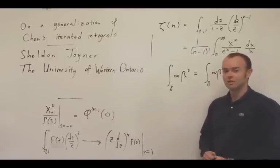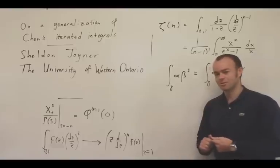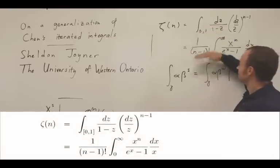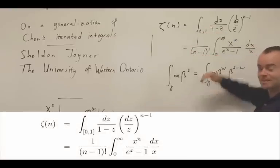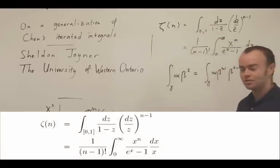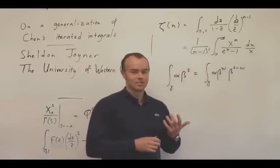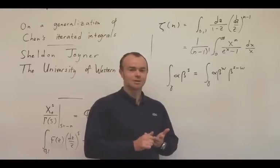Using only the shuffle product formula and the antipode property of general iterated integrals, we're able to show that this integral is the same as that of Arbol. The points at which we use that n is an integer parameter are exactly the properties I mentioned: the shuffle product formula and the antipode.